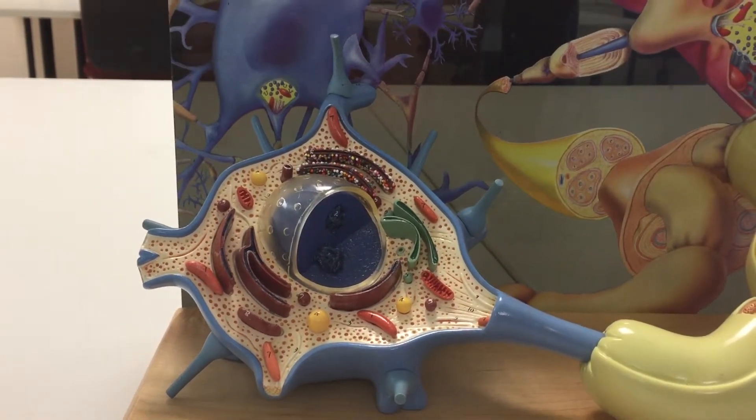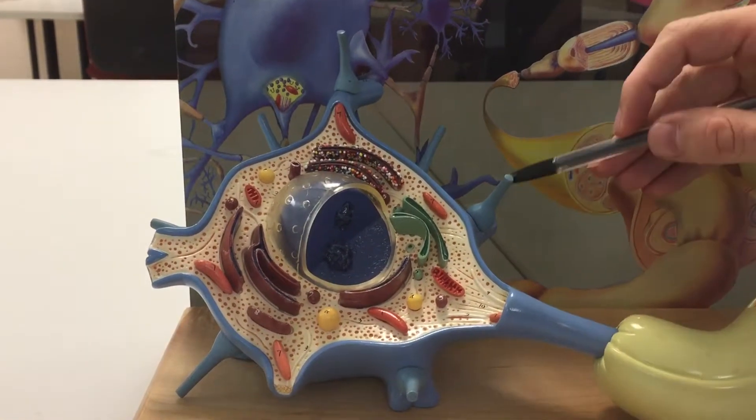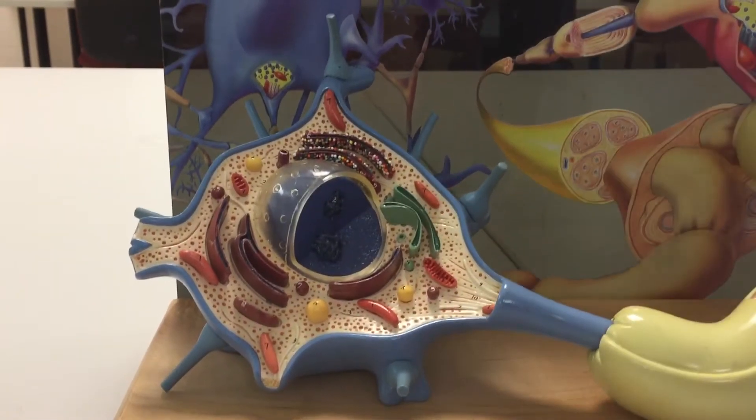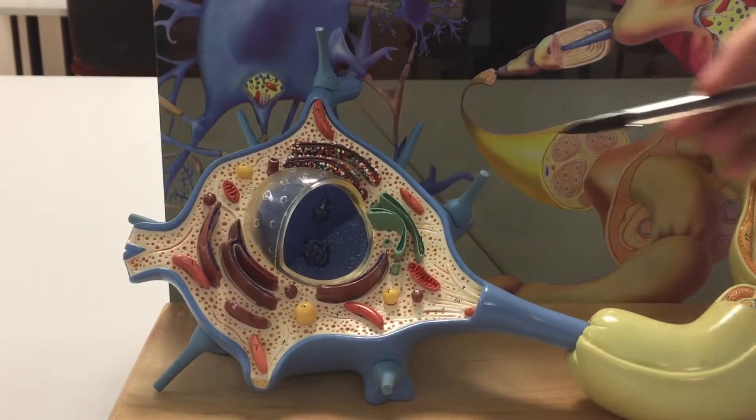The cell processes that you're responsible for, these receptive surfaces here which receive information, those are called dendrites.